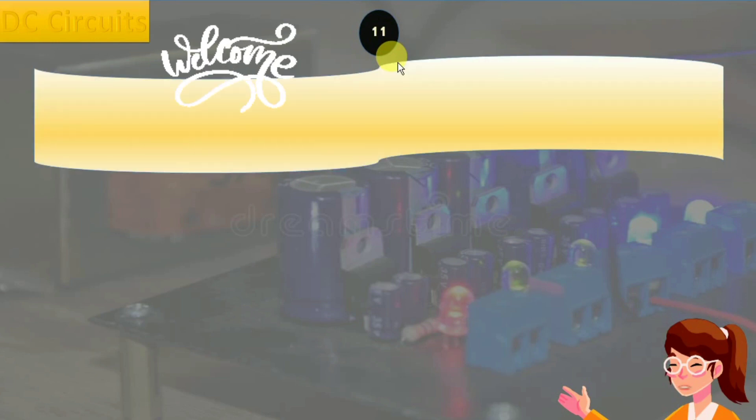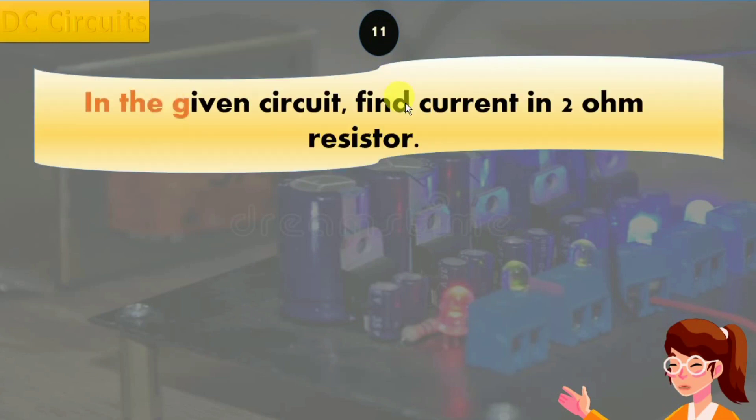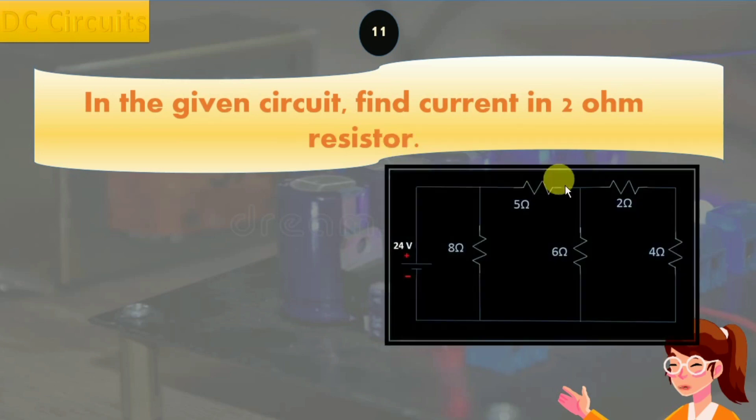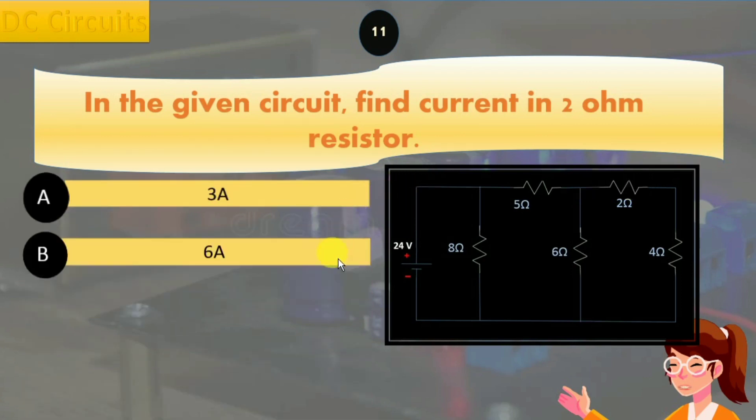DC circuit question number 11: In the given circuit, find current in 2 ohm resistor. Options are: option A, 3 amperes; option B, 6 amperes; option C, 2.5 amperes.